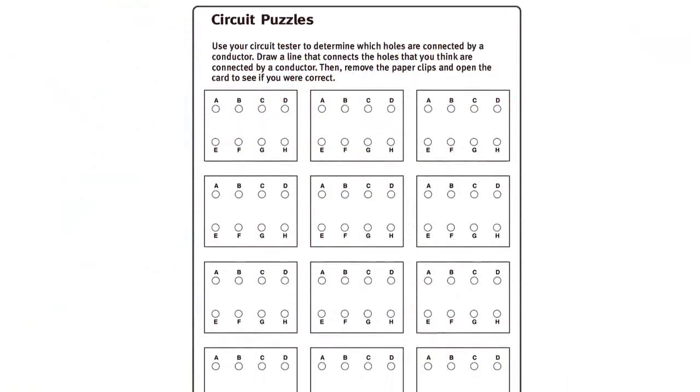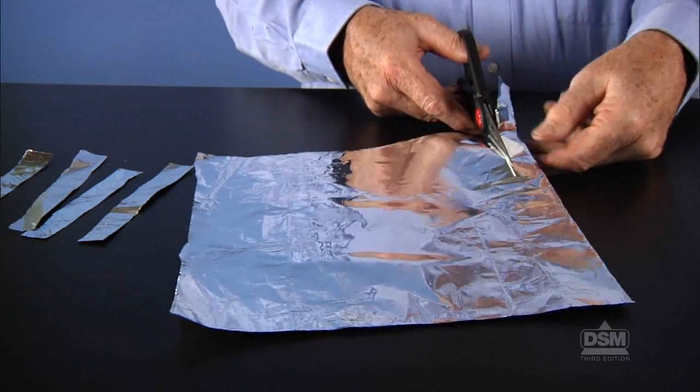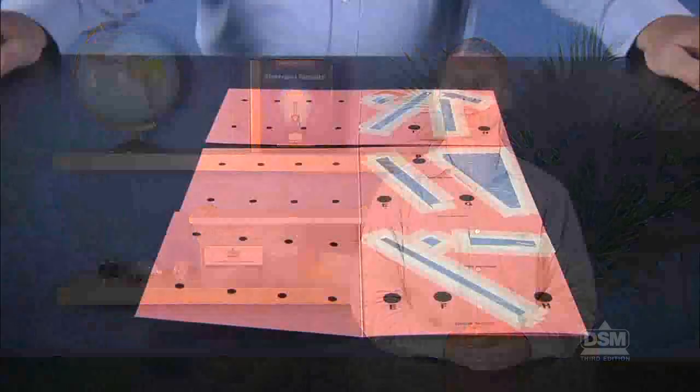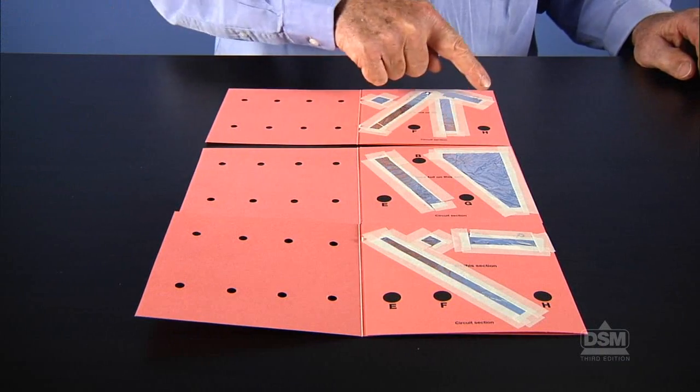To prepare for the activity, make a copy of Activity Sheet 12 for each student and cut 3 or 4 one centimeter by 13 centimeter strips of aluminum foil for each team. Then construct one puzzle for each team. Try to make as many different designs as possible.